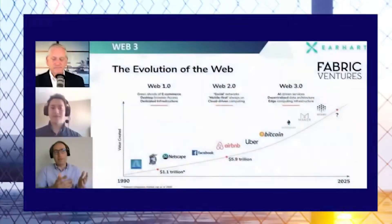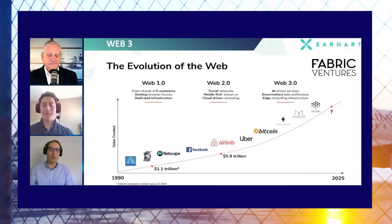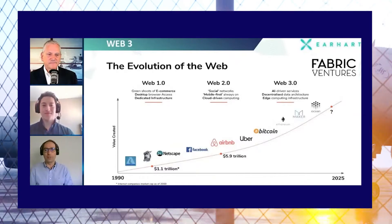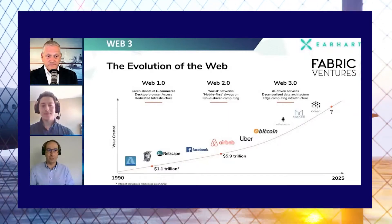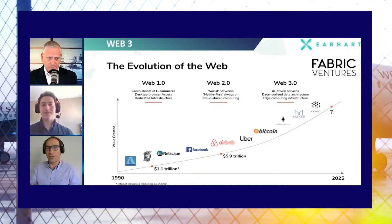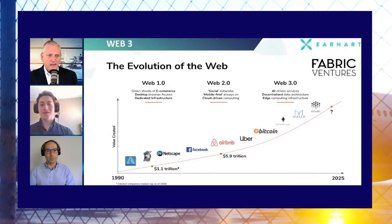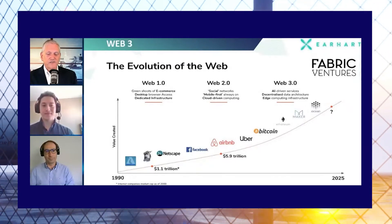Basically the key point here is decentralization. Web1 had a read-only aspect. Web2 is read and write. In Web3 we have read, write, and own the data — so this is quite important. Also, Web3 will be community governed, so it's not centralized. And one of the things we're going to do is talk about the private and public natures of these things.